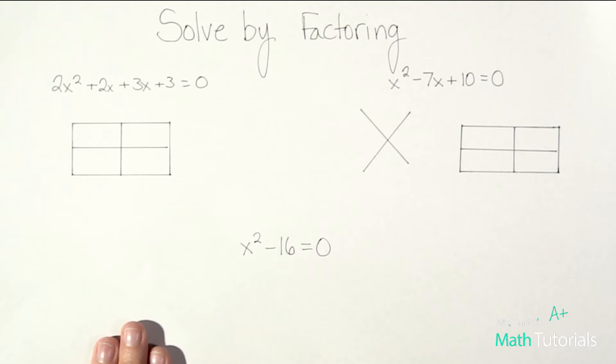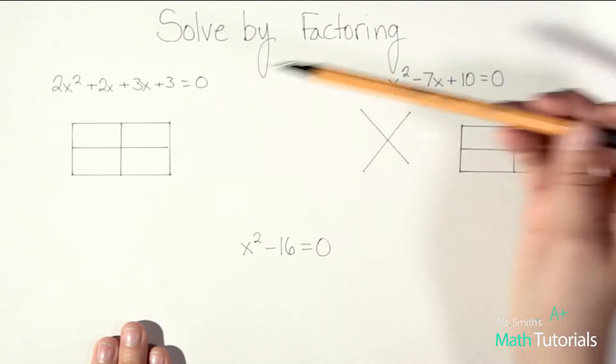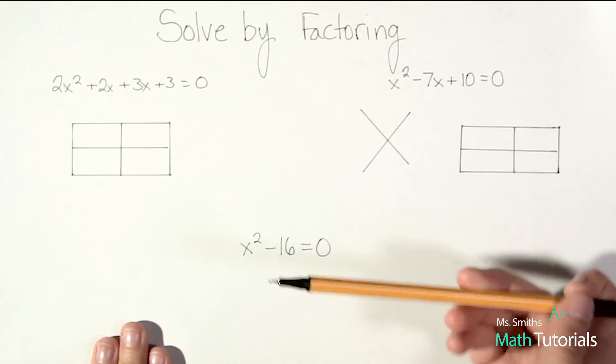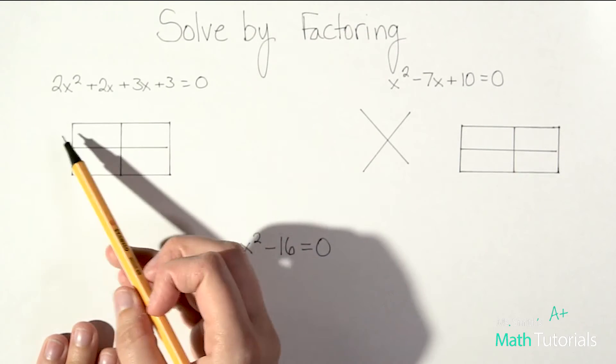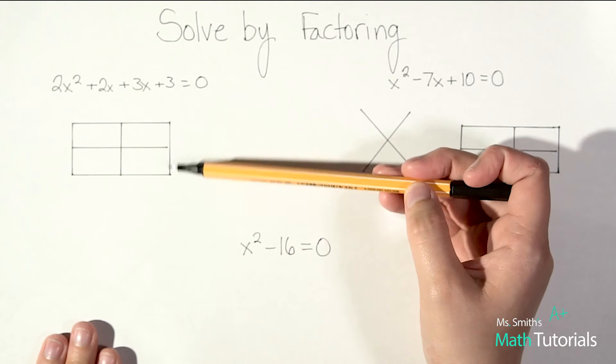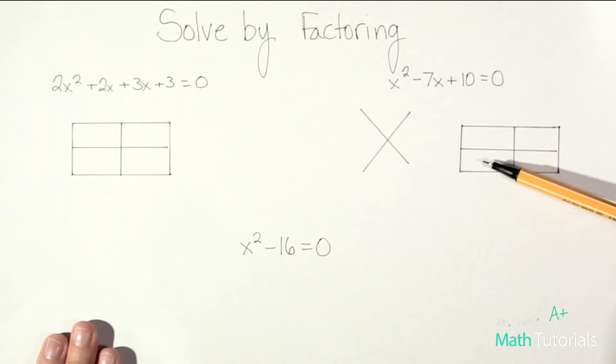So we're gonna talk through three different types of problems. We're gonna look at a four-term problem, a trinomial, and a binomial. Okay, so four-term problem, remember we're gonna be using the alternate method to traditional factoring. We're gonna be using the box and then the x-box method.